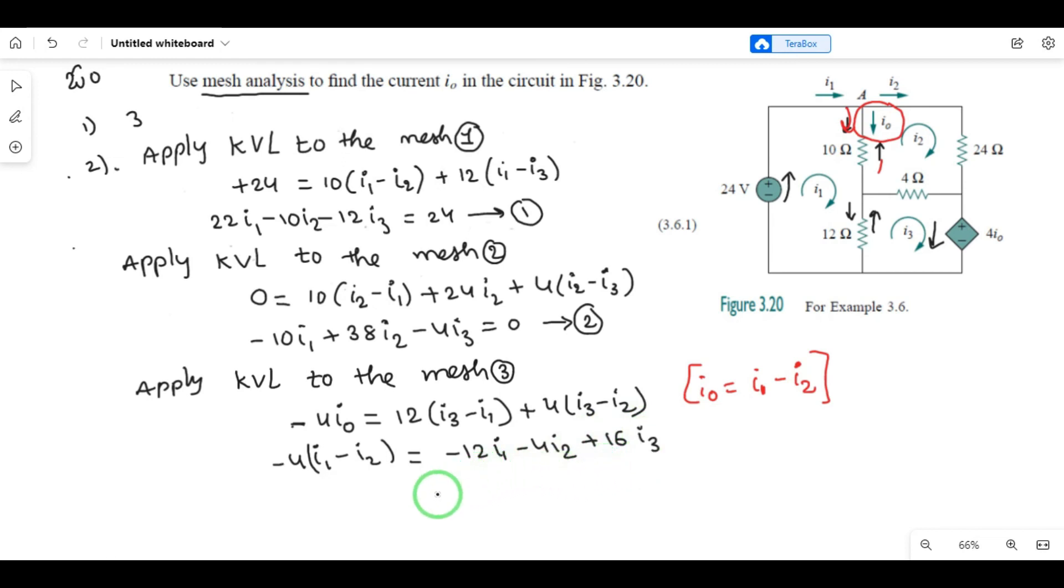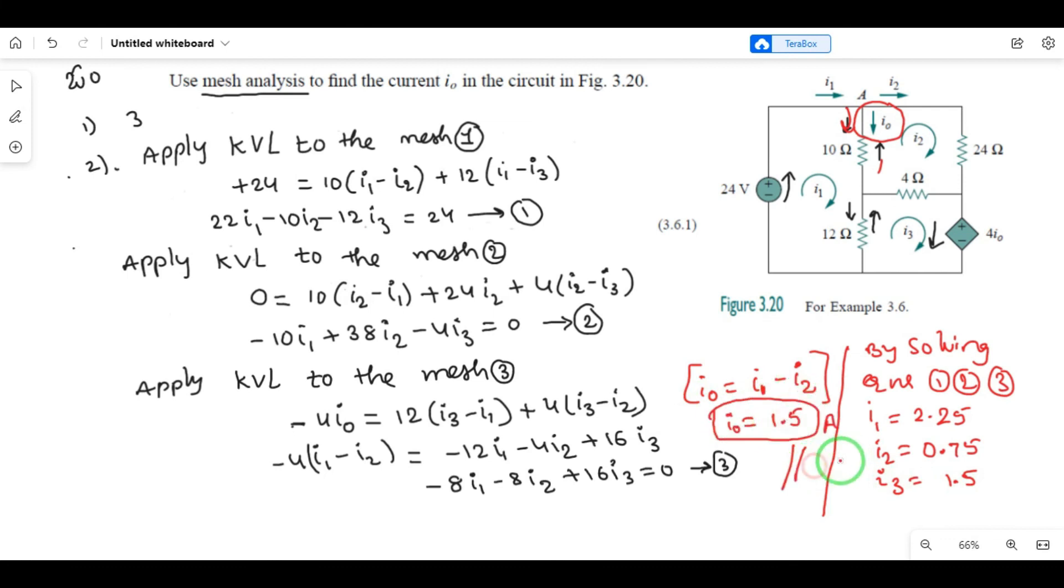Now solve by considering equation 3. By solving equations 1, 2, and 3: I1 equals 2.25, I2 equals 0.75, I3 equals 1.5. We need I0. I0 equals I1 minus I2, so that is 1.5. This is the answer for I0.